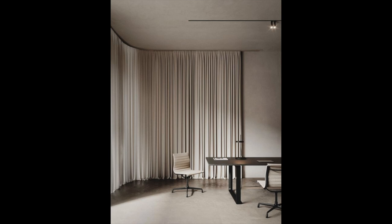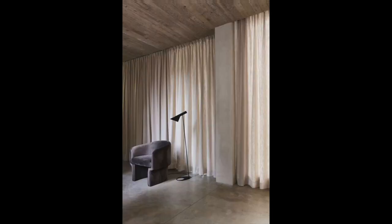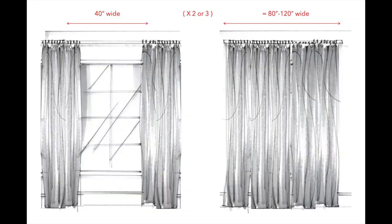Mistake number four is not purchasing curtains that are wide enough for your window. For an elevated and elegant look, you want your curtain panel to have enough width so that when they are completely closed there's still fullness to them. A good rule of thumb is that you cover the entire window in addition to the area of the rod that extends beyond the window, meaning your curtain panel should be two to three times the length of your window. For example, if you have a window that is 40 inches in width, your curtain panel should be at least 80 inches or up to 120 inches.